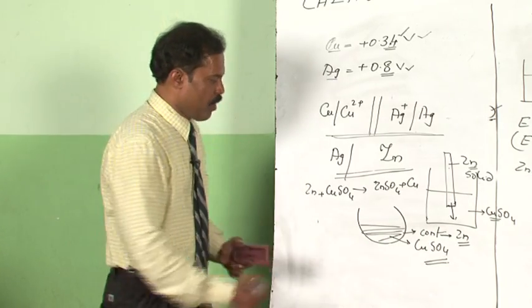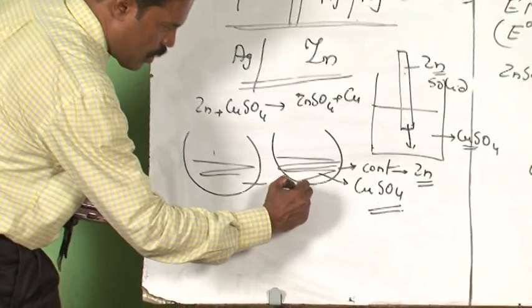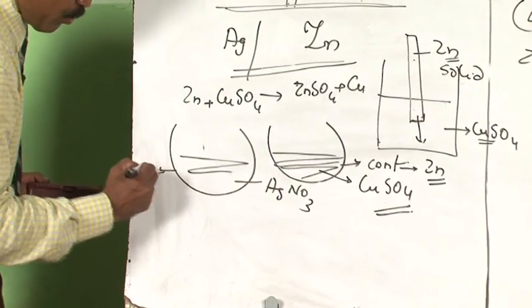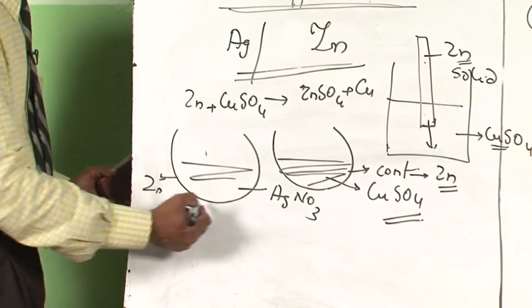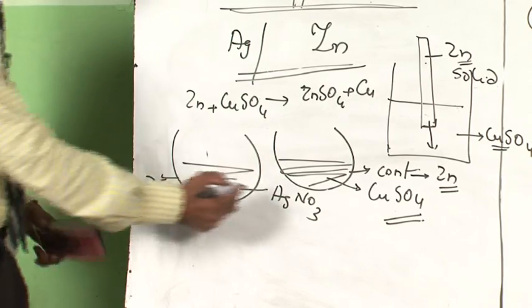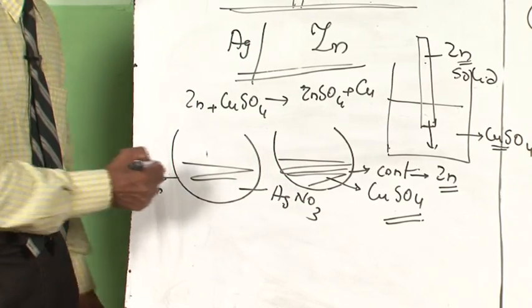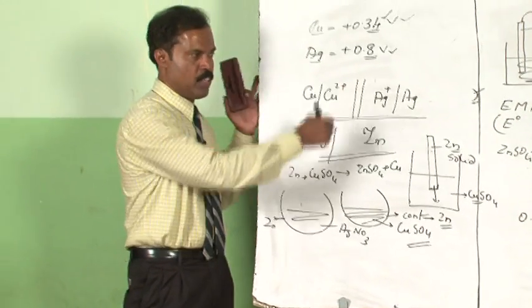Same way, suppose you store silver nitrate in a zinc container, find out whether this is possible. Can we store silver nitrate solution in a zinc container or not? You will find out this from the reduction potential values.